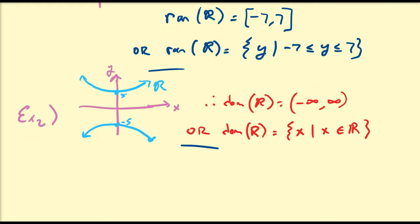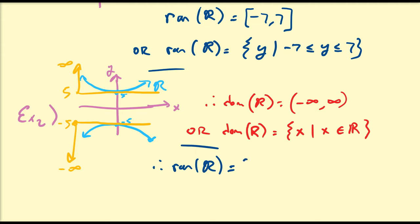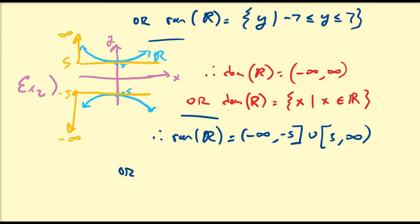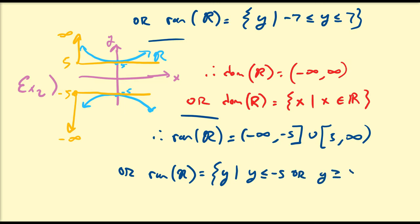For the range, notice that we do not attain any y values between negative five and positive five. But we have everything below negative five — from negative infinity up to negative five, inclusive — and everything from five up to positive infinity. So the range of this relation is going to be the interval negative infinity to negative five, inclusive, union with the interval five to positive infinity. In set notation, the range of r is the set of all y such that y is less than or equal to negative five, or y is greater than or equal to positive five.